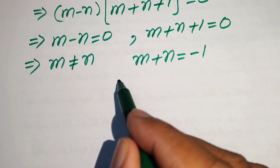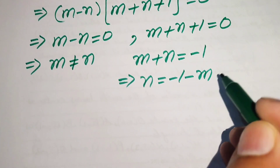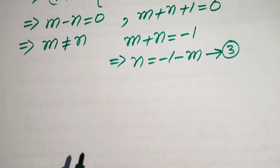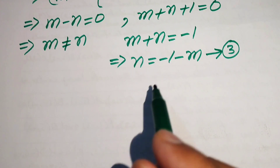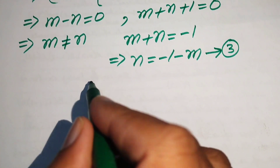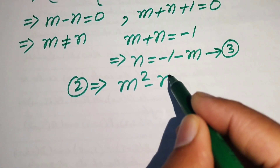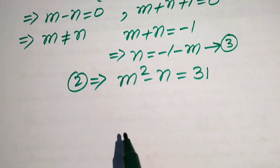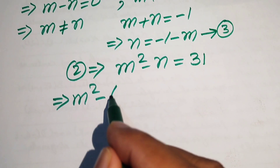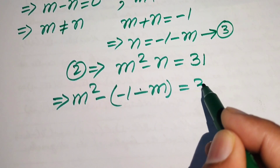Rearranging, we get n equals minus 1 minus m, and we call this equation number 3. We now substitute this value of n into equation number 2. Equation number 2 is n squared minus m equals 31, and substituting gives us m squared minus times of minus 1 minus m equals 31.